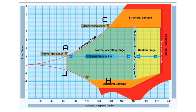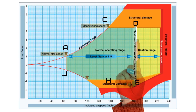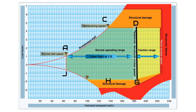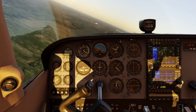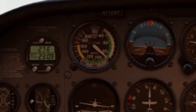From point D to point G is the maximum structural cruise speed, or VNO. If you exceed that maneuvering speed and the maximum load factor for the airplane, this is the range in which we can start seeing structural damage or structural failure. VNO is represented on our airspeed indicator by the point at which the green arc ends and the yellow arc begins.